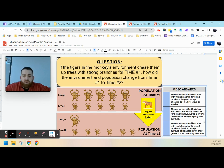Last but not least, the environment had only trees with weak branches for small monkeys. Small monkeys survived and passed down their genes to their offspring over time.